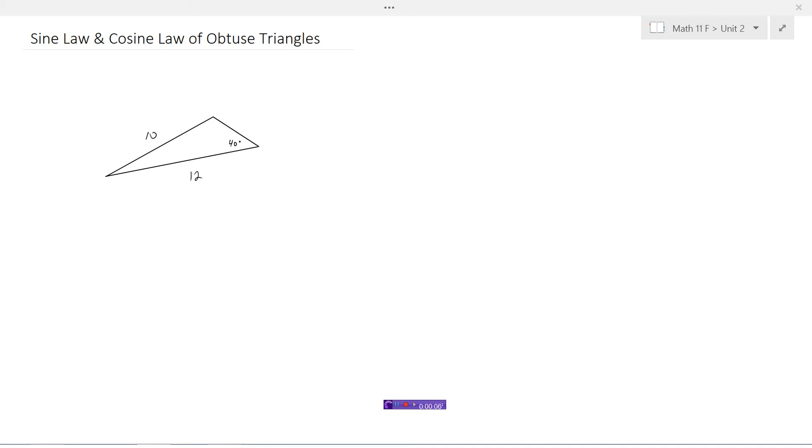Let's look at how we can use the sine law and cosine law to solve problems in obtuse triangles, that is a triangle with more than 90 degree angle in it, like this one. Obviously this angle here is more than 90 degrees.